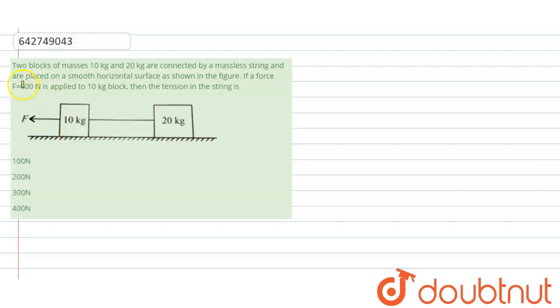Hello students, the question is: two blocks of masses 10 kg and 20 kg are connected by a massless string and are placed on a smooth horizontal surface.